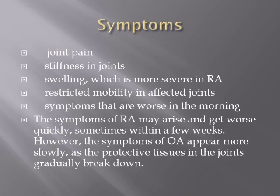The symptoms of rheumatoid arthritis may arise and worsen quickly, sometimes within a few weeks. However, osteoarthritis symptoms appear more slowly as the protective cartilage gradually breaks down, because osteoarthritis is an aging process. Rheumatoid arthritis can cause very destructive effects in a very short time because it is an autoimmune disease — antibodies attacking the joints.